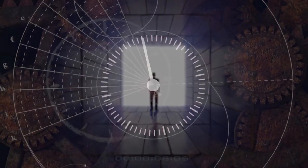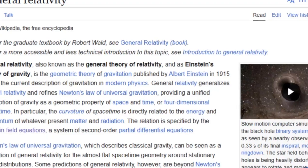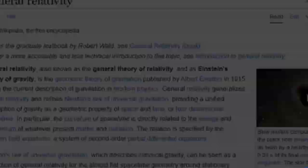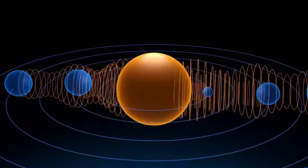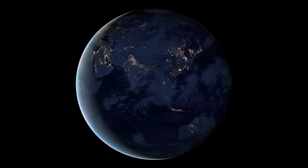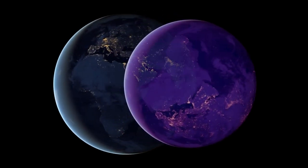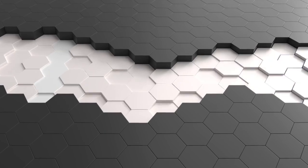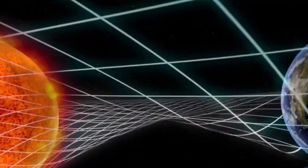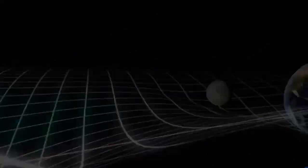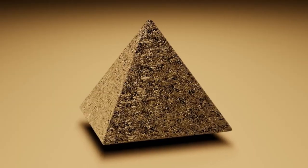Einstein's general theory of relativity further revolutionized our understanding by showing that gravity is not a force acting at a distance, as Newton had proposed, but a curvature of space-time caused by mass and energy. In this framework, massive objects like planets and stars warp the fabric of space-time, and this curvature dictates the motion of objects and the flow of time. For instance, time runs slightly faster on a mountaintop than at sea level because the strength of Earth's gravitational field decreases with altitude. This effect, though minor, has been confirmed by precise measurements using atomic clocks.